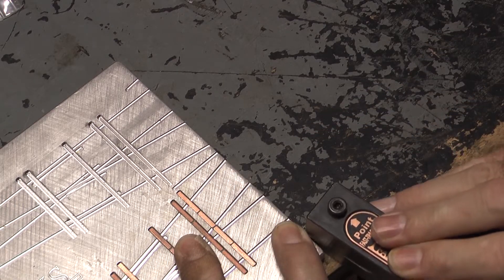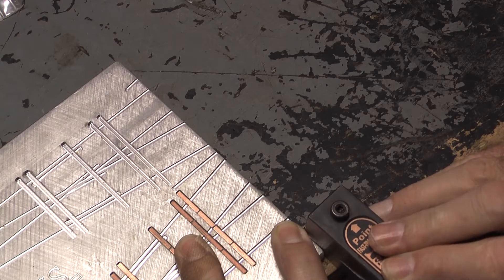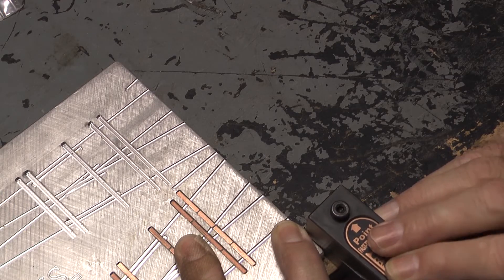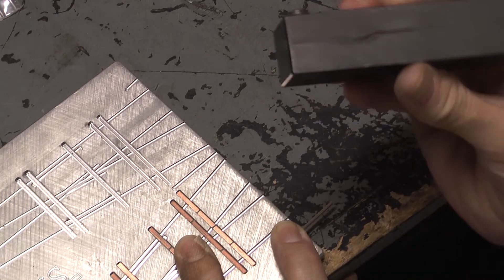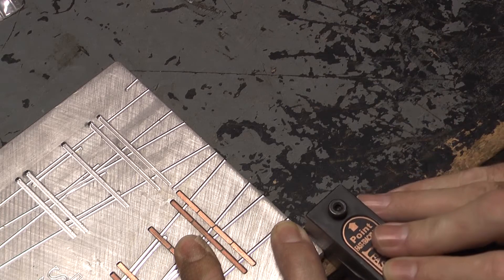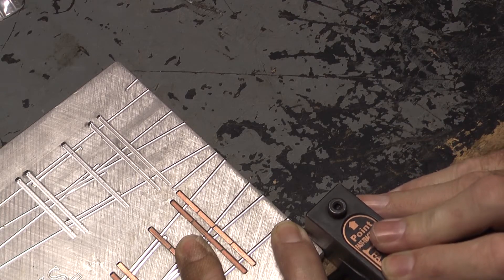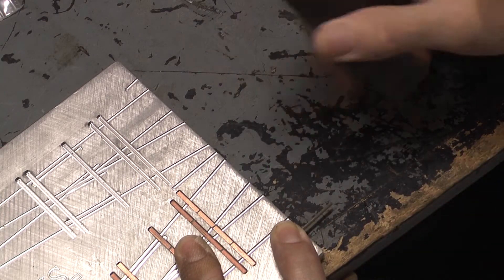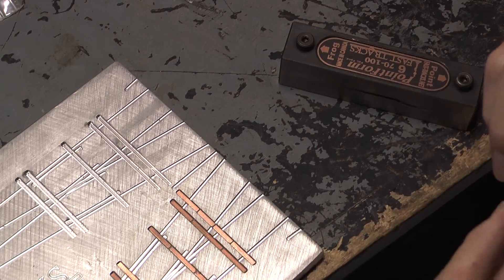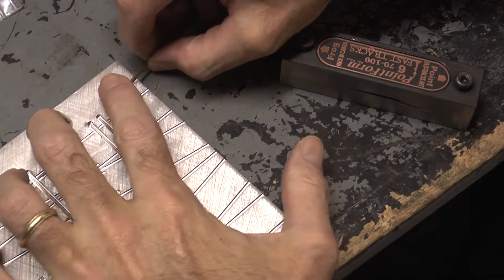And to make that angle, and then since the tool's a 90 degree perfect angle, you can get that parallel on the straight part, and then you just turn around and do the same thing on the other side.